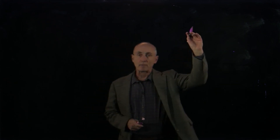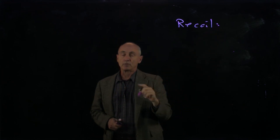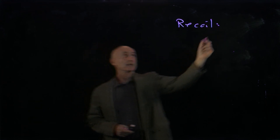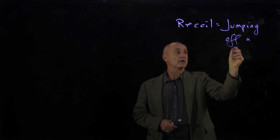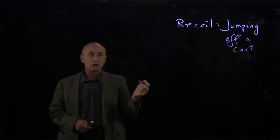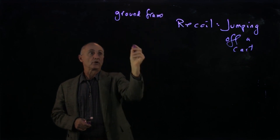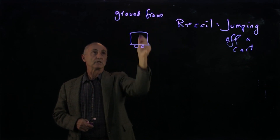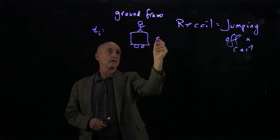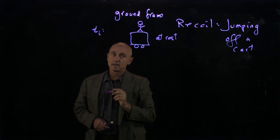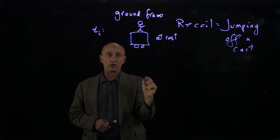Let's apply the momentum principle to an example of recoil. In our recoil example, we have a person jumping off a cart. Let's look at how this works using momentum diagrams. Suppose we choose a ground frame, and in that frame we have a cart and a person. The person is standing on the cart at t initial, and they are at rest. The person will jump horizontally off the cart, and the cart will recoil in the opposite direction.